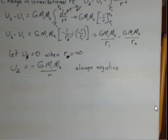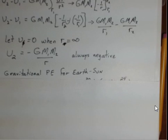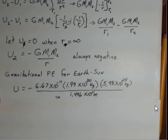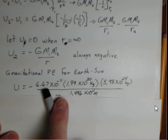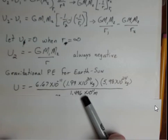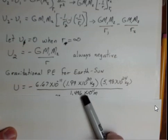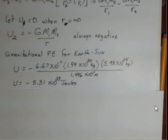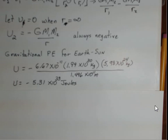That's our traditional choice: let potential energy be zero when R is infinity. For the specific Earth-Sun gravitational potential energy, we plug in the gravitational constant, the mass of the Sun, the mass of the Earth, and the average distance between them — the Earth's orbit is not completely circular. Doing that calculation, we find the potential energy is minus 5.31 times 10 to the 33rd joules. That's a big number — the Sun has a lot of mass.